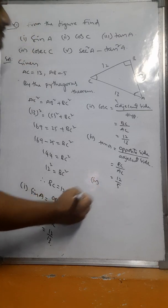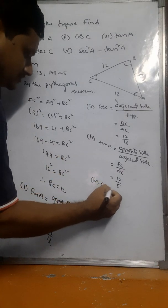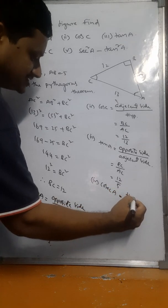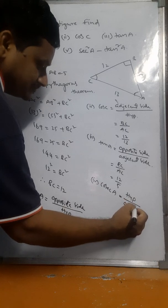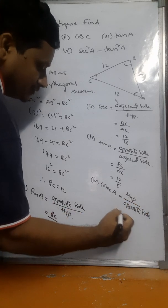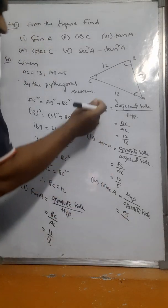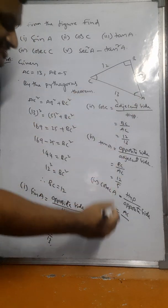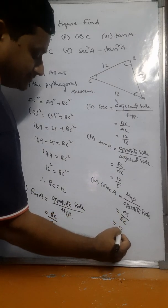Cosec A means hypotenuse by opposite side. The hypotenuse is AC and the opposite side to angle A is BC. So cosec A equals AC by BC, which is 13 by 12.